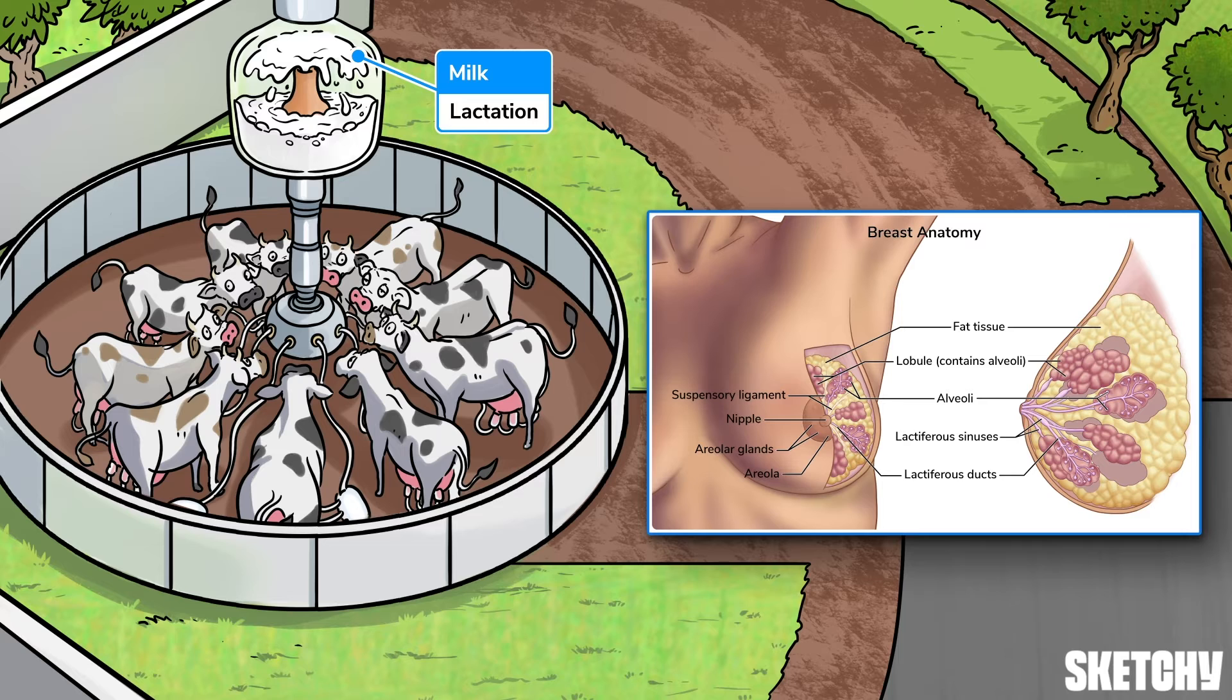The lobules contain milk-producing cells called alveoli. The milk moves from the lobules within the lobes to the lactiferous ducts, then the lactiferous sinus before exiting via the nipple.